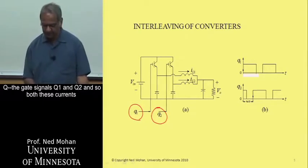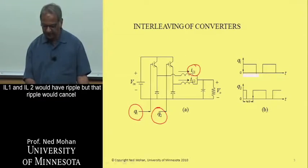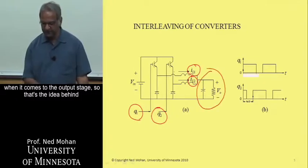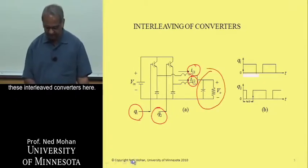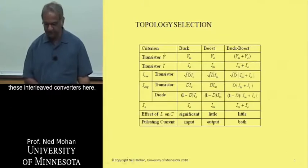And so both these currents IL1 and IL2 would have ripple, but that ripple would cancel when it comes to the output stage. So that's the idea behind these interleaved converters here.